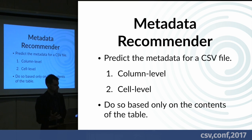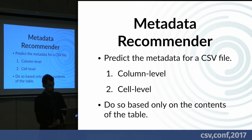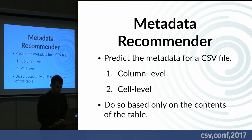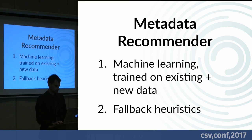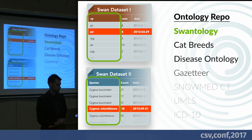With a metadata recommender service, we want to predict metadata for a CSV file in a two-step process: first predict the column-level ontology, then predict the cell-level value. We want to do this based only on the contents of the table itself, so it's useful for a random CSV sitting on someone's hard drive without relying on a paper having been written. We want something that can prioritize among different ontologies and produce recommendations, with a usable API so it's valuable even if the rest of the project sputters.